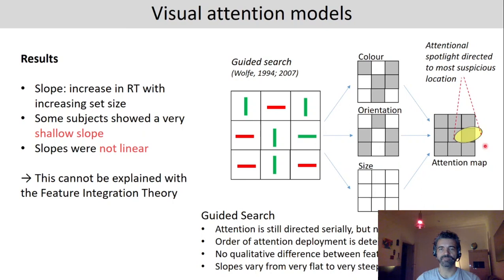This also means that there's no qualitative difference between feature and conjunction search. But the slopes vary from very flat to very steep due to the signal to noise ratio. In this example this is very clear cut. But because the representation of stimuli is always a bit noisy, it could also be that attention under certain circumstances is not directed to the target first, but to some other location. Just as an example, if there is a line that is almost horizontal and also green, then it might also have a relatively high activation and because of the additional noise, it could be that this item is attended first.